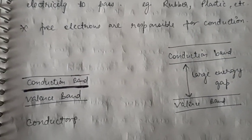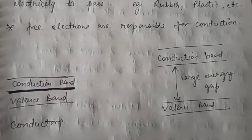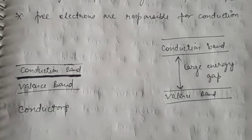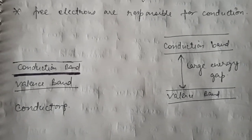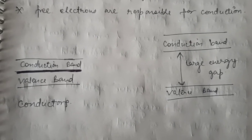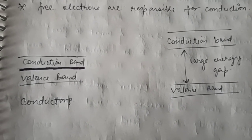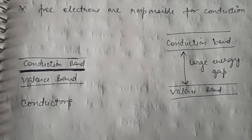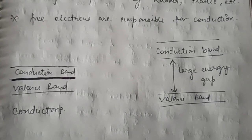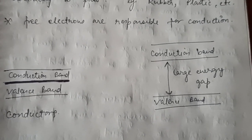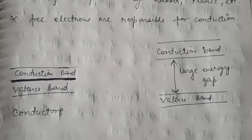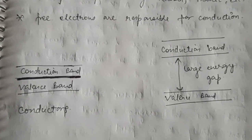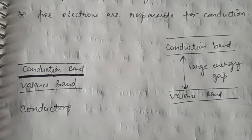There are different theories you will study later. Here I am representing the valence band and conduction band theory for conduction in metals, semiconductors, and insulators. In conductors, the valence band and conduction band overlap, making it very easy for electrons to move to the conduction band. Whereas in insulators there is a very large gap between the valence band and conduction band, so electrons cannot move and there is no conduction.